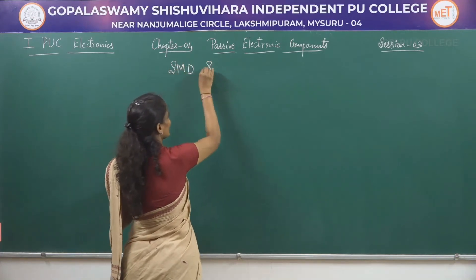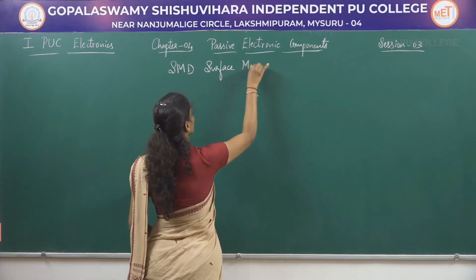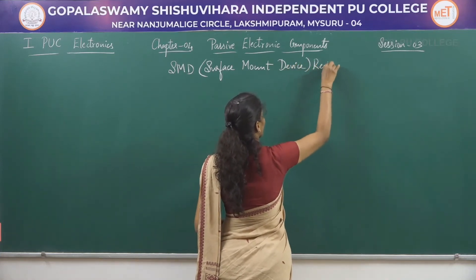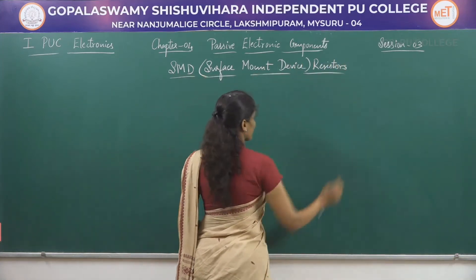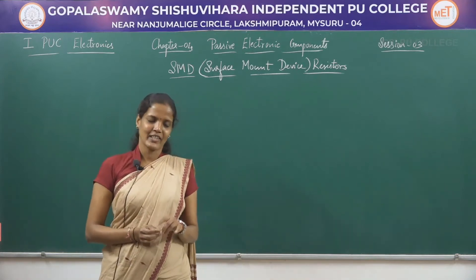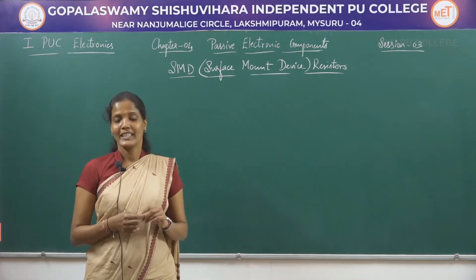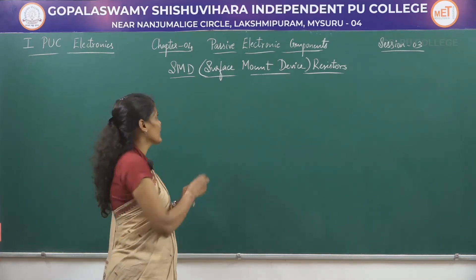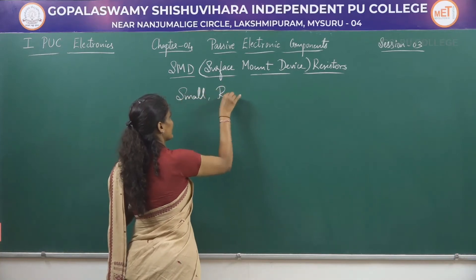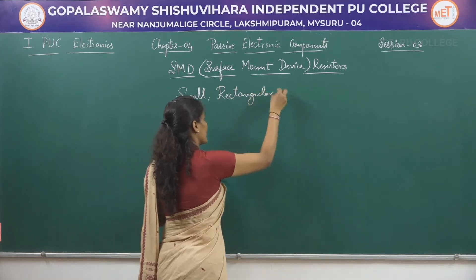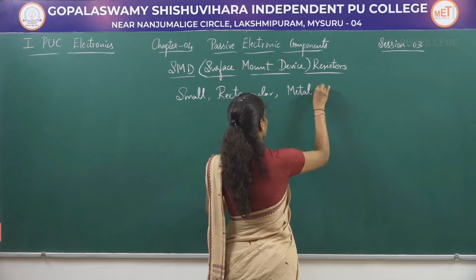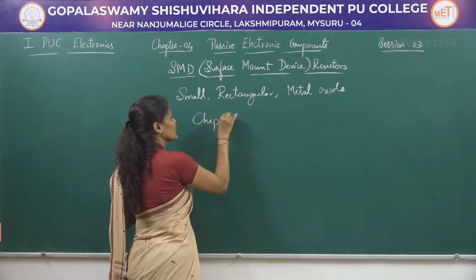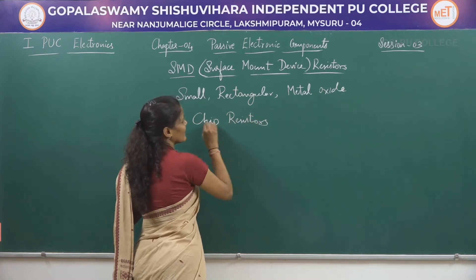SMD stands for surface mount device. SMD resistors are one type of fixed resistor — their value cannot be changed; it is constant. These SMD resistors are small rectangular-shaped metal oxide film resistors, very small in size. They are also called chip resistors because they are very small in size and resemble a chip.